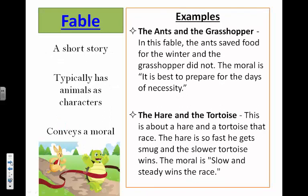Finally, we have fables. Fables are short stories that typically have talking animals as characters and convey a moral to the story. They're similar to parables, but parables don't have talking animals, and fables don't necessarily have a spiritual lesson. Some famous examples: the ants and the grasshopper — the ants saved food for the winter and the grasshopper did not; the moral is it's best to prepare for the days of necessity. The hare and the tortoise is about a rabbit and a turtle that race; the rabbit gets smug and the slower turtle wins; the moral is slow and steady wins the race.